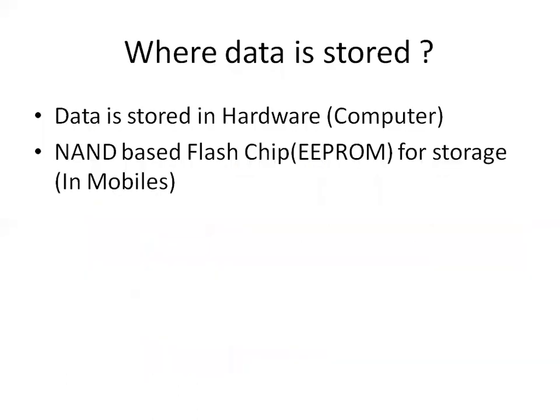When you create any data — let's say if you consider your phone — it gets stored in a set of memory or a chip. There are different kinds of hardware devices which store data. If you consider a laptop or desktop, data generally gets stored in the hardware, nothing but the hard disk. If you consider the human brain, data gets stored in the brain because the brain is an organ capable of storing data. In a mobile phone, they have a concept called EPRAM, where data gets stored in a particular flash chip.